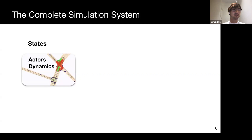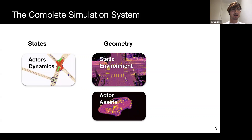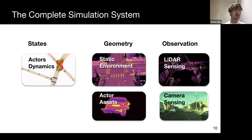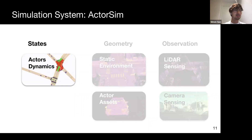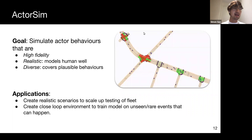To build a complete simulation system, we need to first animate the dynamic state of the environment, including actors such as vehicles, pedestrians, and cyclists. Then we need to construct accurate geometries of both the static environment and the dynamic actors. Finally, we simulate the sensor observations that the SDV is receiving. We will begin by talking about simulating actor dynamics, which we refer to as actor sim. The goal of actor sim is to generate actor behaviors that are high fidelity, realistic—meaning we want to model human behavior—and diverse, in the sense that it can cover all possible behaviors a human might execute in a particular scenario.